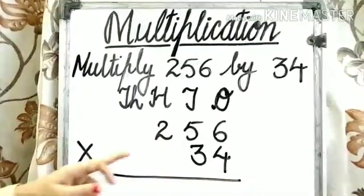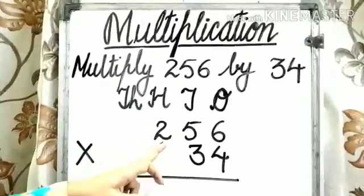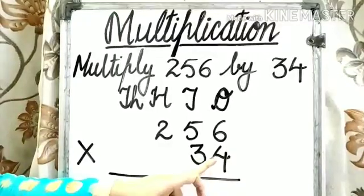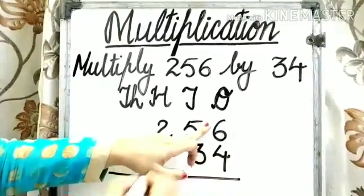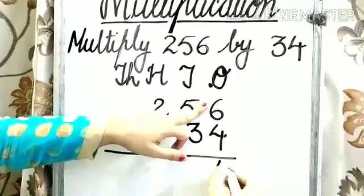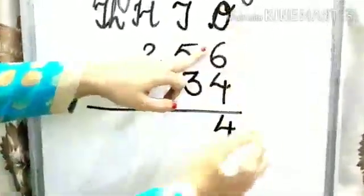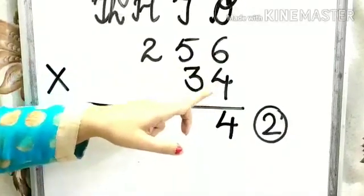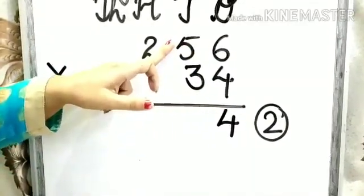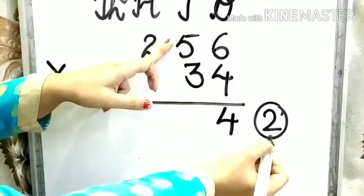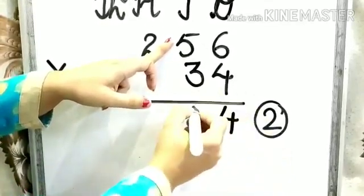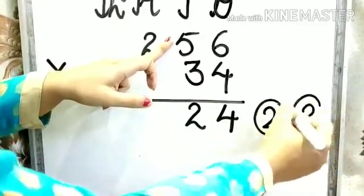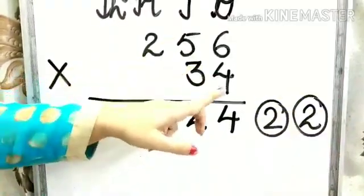Step 1: we have to multiply 256 by 4. Let's start. 4 times 6 is 24, so write down 4 under the 1s column and 2 will become carry. Now 4 times 5 is 20, 20 plus 2 is 22, so write down 2 under the 10s column and again 2 will be carry.